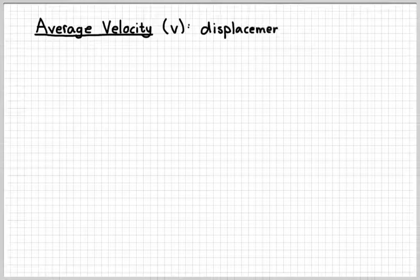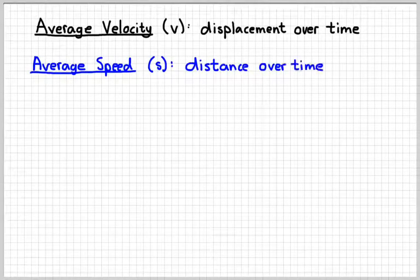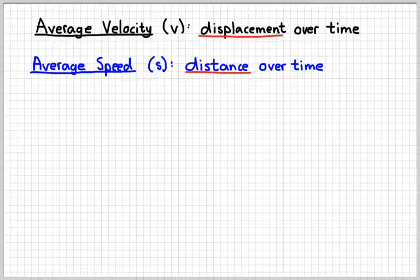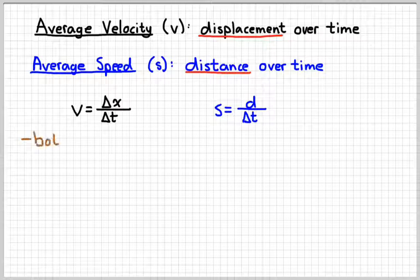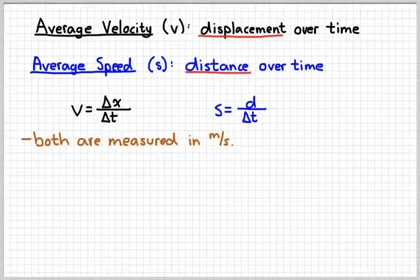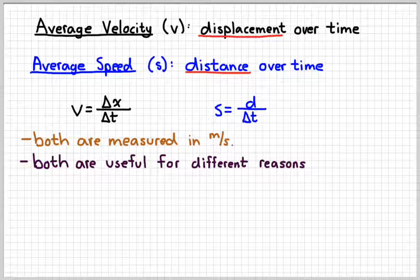So, let's redefine the term velocity — we're going to call this the average velocity. Average velocity is displacement over time. Average speed is distance over time. So, they're very similar definitions, but fundamentally they're different. Velocity is dependent on displacement; speed is dependent on distance. Our equation for velocity is delta x over delta t, and our equation for speed is d over delta t. Both are measured in meters per second and both are useful in different situations — speed for a car on a racetrack, velocity for navigating a boat across a lake.